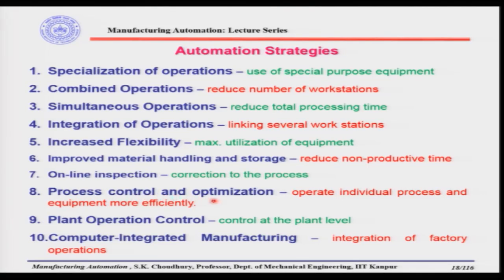The next point is process control and optimization — operating individual processes and equipment more efficiently. Sensors identify process performance and dictate how to maintain optimum conditions. We further extend process control and optimization to the plant level, and this is called plant operation control, where the concept of process control is extended to the entire factory level.